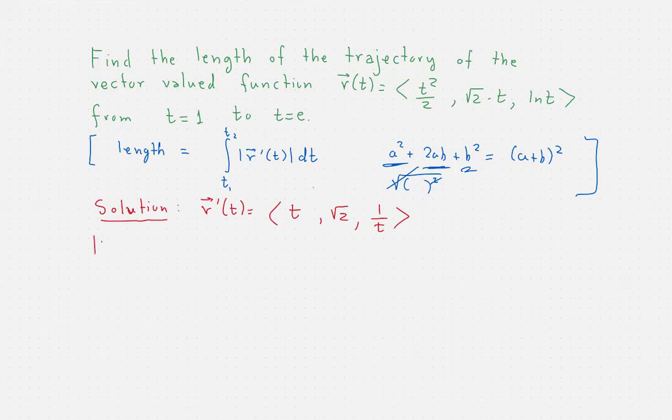So this will be the square root of t squared plus the square root of 2 squared, which is 2, plus 1 over t all squared. And then at this point, we need to somehow find all of these components in there. How do we do that?